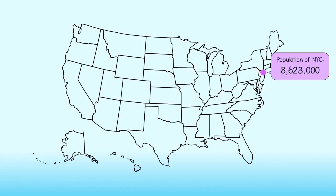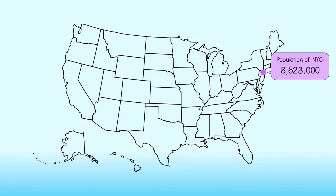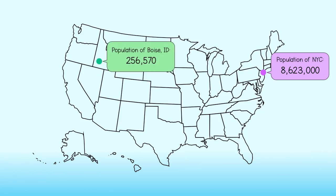Did you know the population of New York City is 8,623,000 and growing? The population of Boise, Idaho is 256,570. If someone asked you to recall such numbers, you would probably want to give them an estimate.